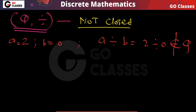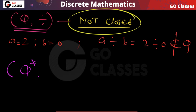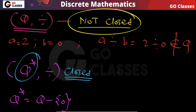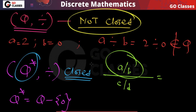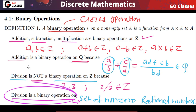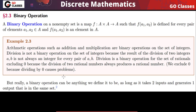But if you take the set of non-zero rational numbers Q*, then this set is closed under division. If you take any two non-zero rational numbers A/B and C/D, since neither is zero, the result is also a non-zero rational number. So division is a binary operation on the set of non-zero rational numbers.